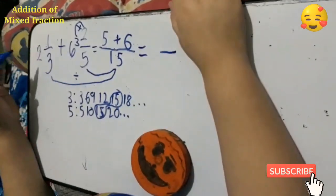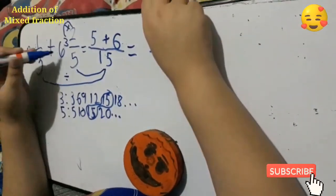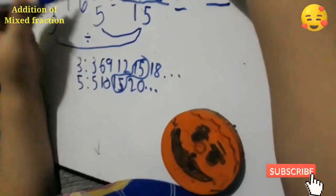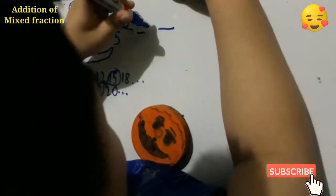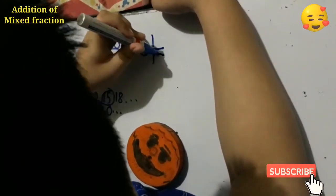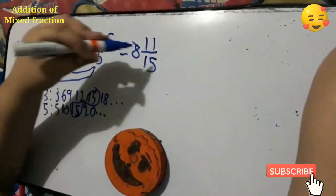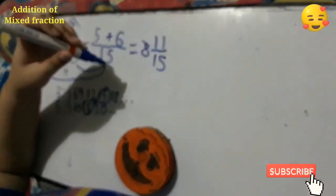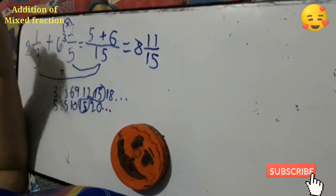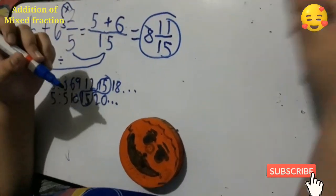Don't forget to add. 2 plus 6, the whole numbers. You need to add the whole numbers. Then it's 8. Let me just put 15 here. 5 plus 6 is equal to 11. Is it the final answer? Yes. Because you can't simplify 11. So that is the simplest form. 8 and 11 over 15 is the final answer.